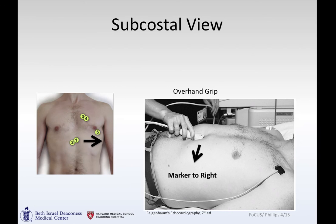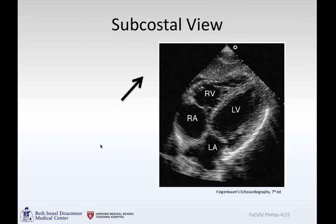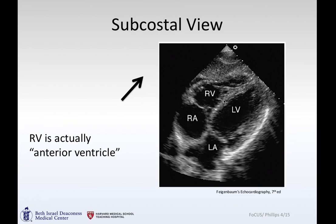To get the subcostal view, you take an overhand grip — whereas up at the parasternal position you hold the probe like a pencil, down here it's an overhand grip. Your marker is now flipped to your right, which is the patient's left. When you do that, you see the right ventricle and right atrium first, then the left ventricle and left atrium a little bit deeper. The liver is also visible in this view.